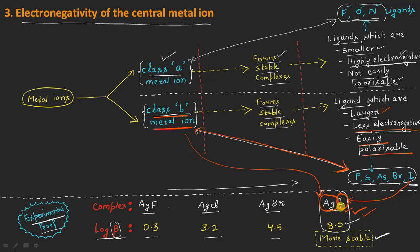In summary, the stability of a metal complex depends on two main factors: the central metal ion and the nature of the surrounding ligands. As far as the metal ion is concerned, it further depends on three factors: first, the charge — higher charge means higher stability; second, the size — smaller size means higher stability; and third, the electronegativity — whether the metal ion is Class A or Class B determines which type of ligand will form a stronger and more stable complex.